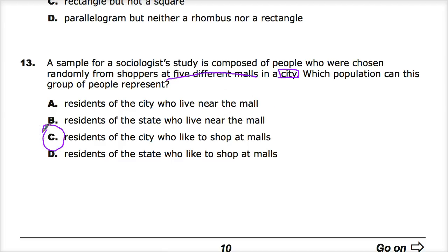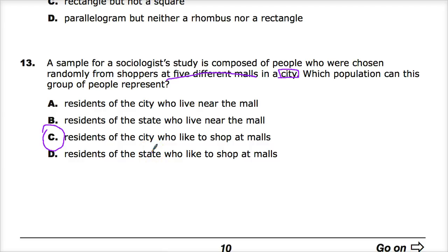When you do a sample set, it limits you based on the parameters you've created, but it also allows you to pinpoint specific things — so limiting you is not necessarily a bad thing. Here we can't really know much about people who just live near the mall, because you actually have to go to it. You're more focused on the city than the state, because you're limiting your sample size just to that city.